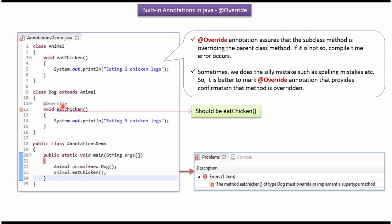@Override annotation makes sure the subclass overrides the parent class method. If the subclass does not override the parent class method, then a compile time error will occur.